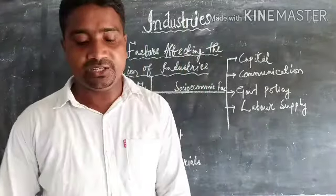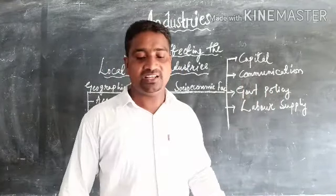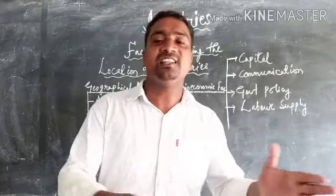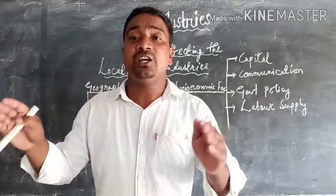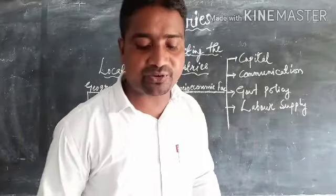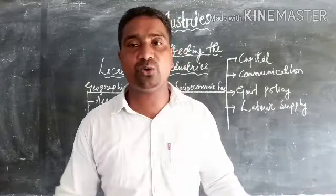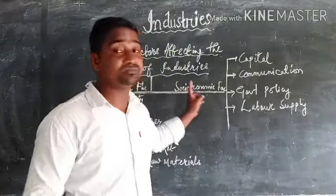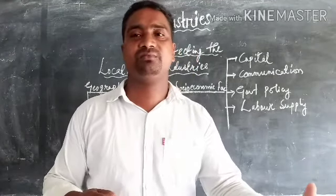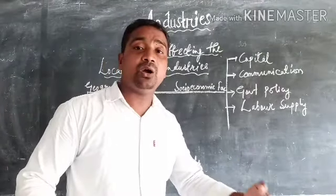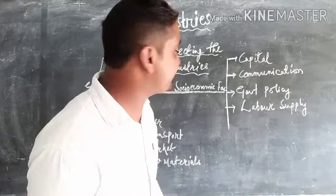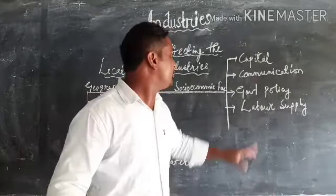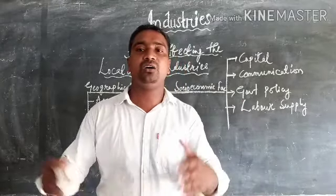Then there is government policy. Governments can greatly influence the location of industries by providing tax incentives — cutting down taxes for certain industries in order to uplift them — and by offering cheap rent and other benefits. By this support, the government also helps improve the lives of the people, because once an industry is established, development takes place. So governments make different policies in order to improve industries.